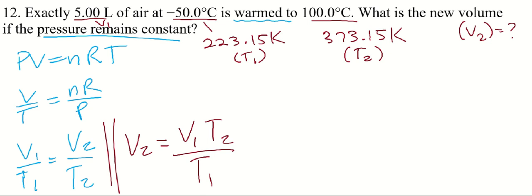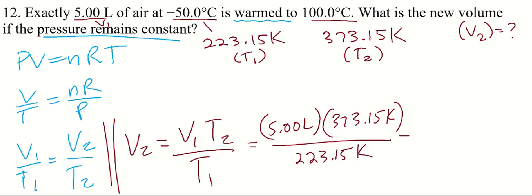All right, so now we can just plug and play, plug our numbers in. And we have V1 is, there it is, 5.00 liters. T2 is, sorry, 373.15 Kelvin. T1 is 223.15 Kelvin. And you punch all those numbers in. Kelvins are going to cancel out. You'll be left with liters. 5 times 373.15 divided by 223.15.